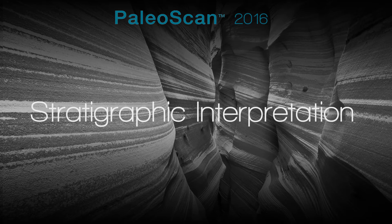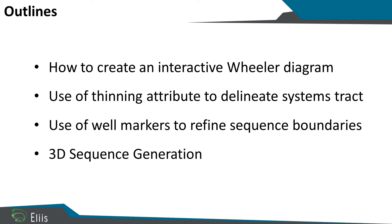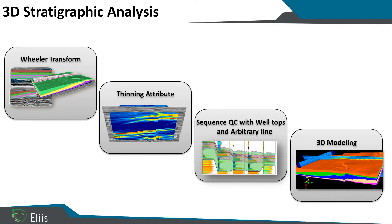Welcome to the Stratigraphic Interpretation presentation. This video illustrates the sequence stratigraphy tool available in PaleoScan. We'll see how to use and create a Wheeler diagram using a specific attribute to delineate sequences, knowing that well data can be used to refine sequence boundaries. We'll also see how to extract 3D objects from the stratigraphic analyses. The Wheeler domain is built in three dimensions, allowing 3D navigation. Sequence boundaries can be defined by combining attribute information with well data, and everything interpreted from the stratigraphic viewer can be extracted and modelled in 3D.